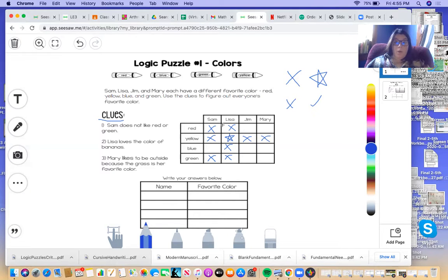And now before we even go on to our next clue, we know Sam's favorite color. The only other option is blue for Sam. So we're going to put a star for him, and then we can cross out blue for Jim and Mary.